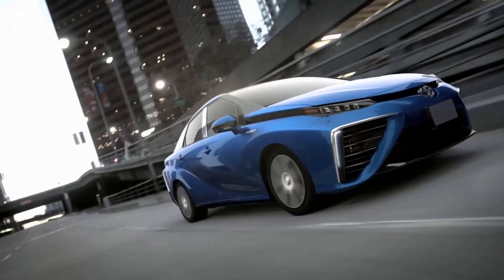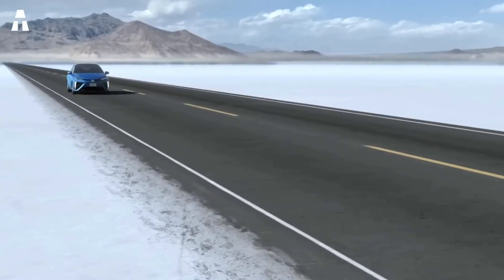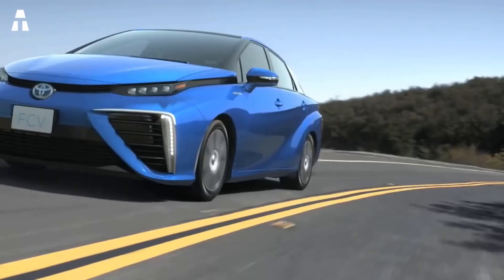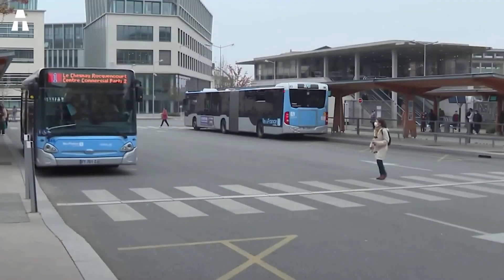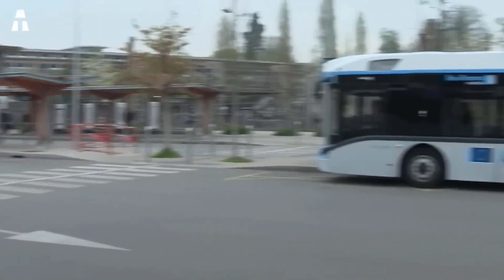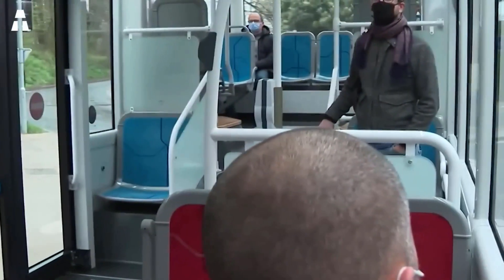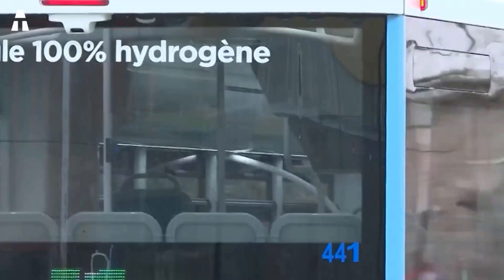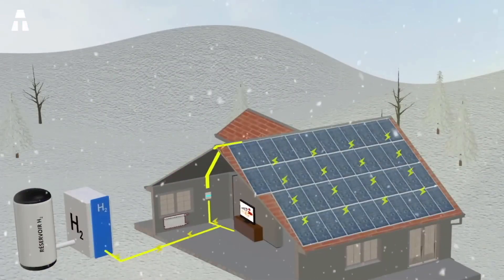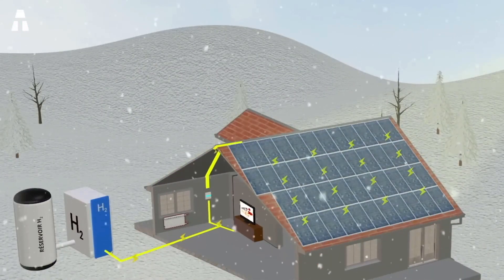A hydrogen vehicle does not get much press compared to the electric car, and yet its qualities are real even if they're not well known. France, a latecomer to the field, has started to deploy a fuel cell service. The craze for cars equipped with this technology is growing in California as well as in Japan, where hydrogen can also be used to supply electricity to households. But what exactly is hydrogen?